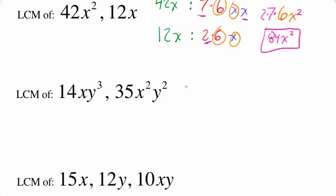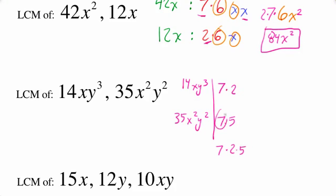Let's take a look at another example. 14xy cubed and 35x squared y squared. Now one way of doing this is to line everything up. So we're going to continue using the method that we've done here. So 7 times 2 is 14, and 7 times 5 is 35. So we know that we're going to need a 7, we're going to need a 2, and we're going to need a 5. The 7 only, we only need once, because the 7 appears in both.